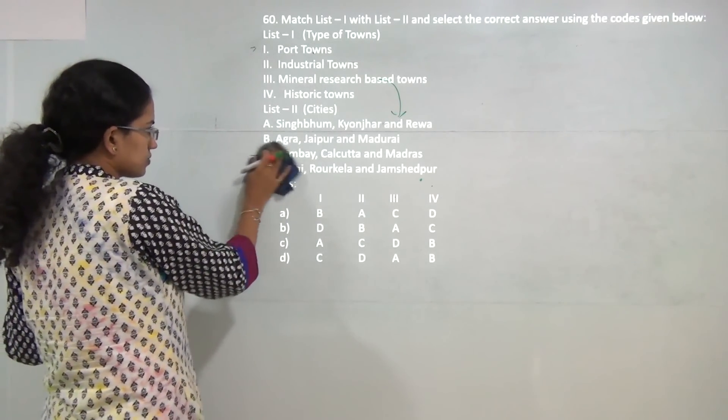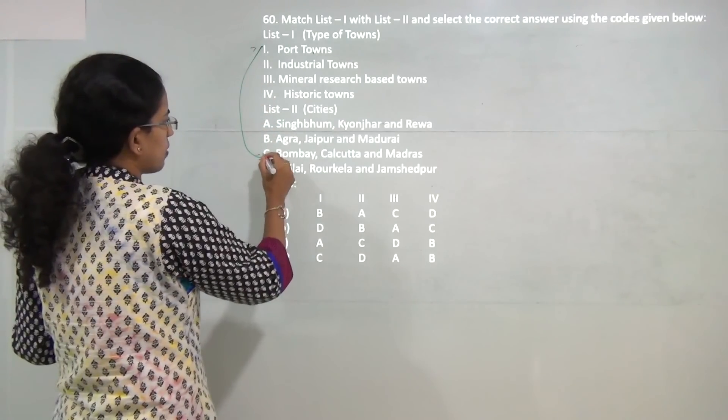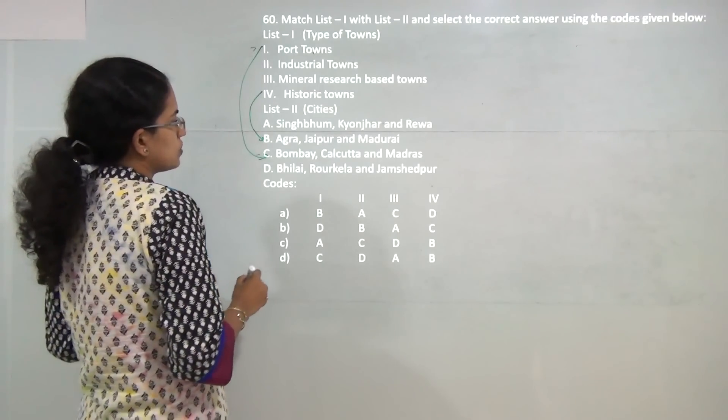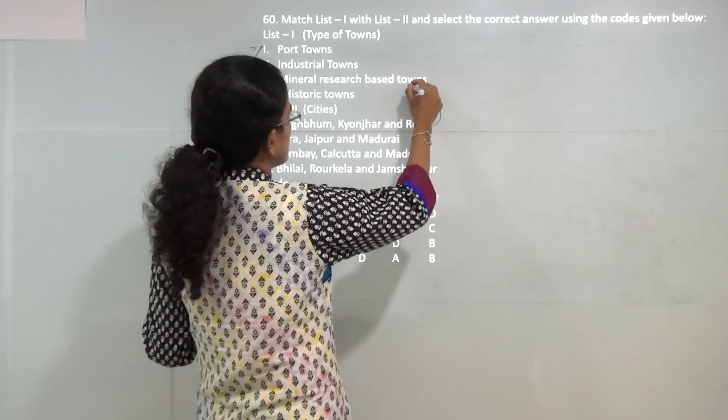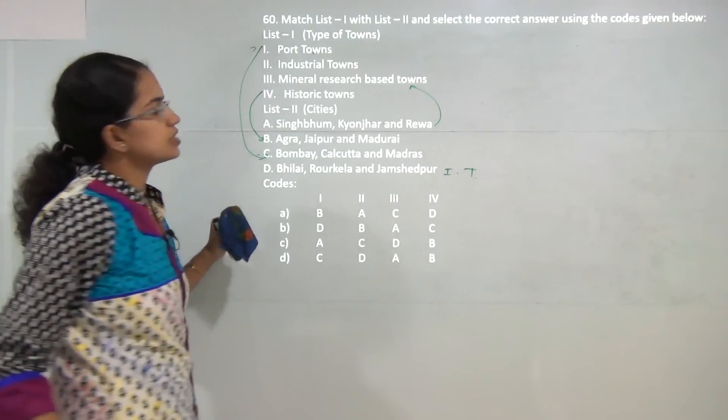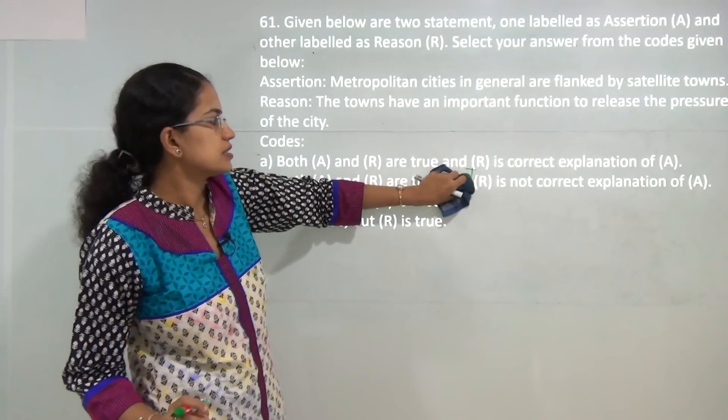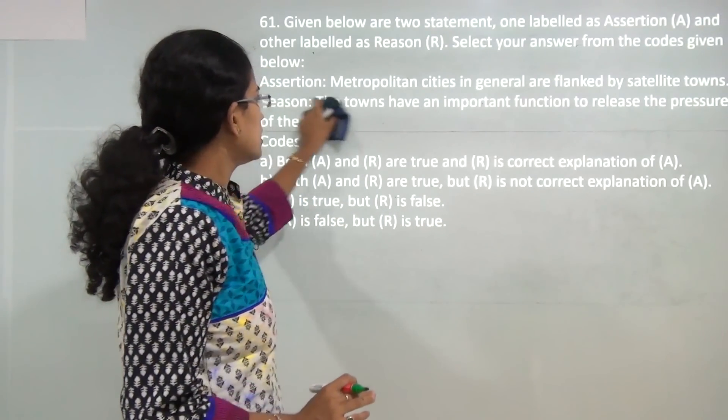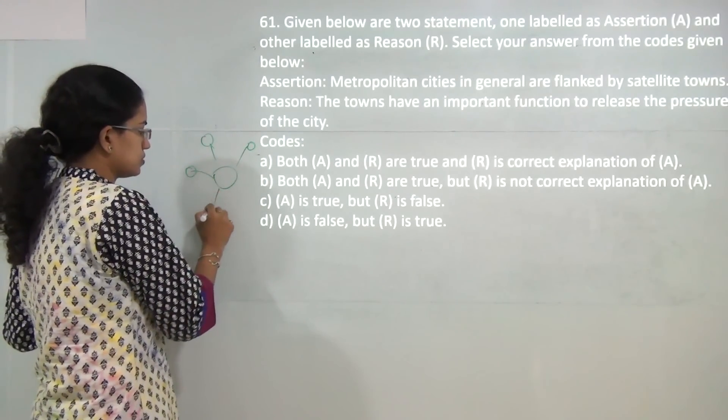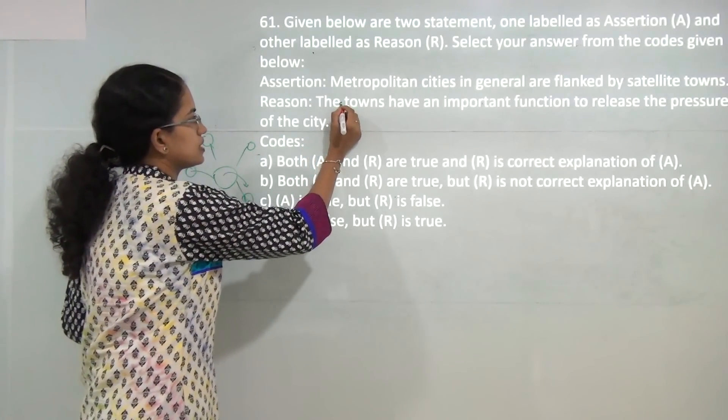Now match the towns with the type of towns. Bombay, Calcutta, and Madras are port towns. Agra, Jaipur, and Madurai are historical cities. Singarani, Konjanur, and Rewa are mineral towns. And Bhilai, Rourkela, and Jamshedpur are industrial towns. Next metropolitan question - this question is a bit ambiguous because it's not clearly mentioned in the assertion and reason.